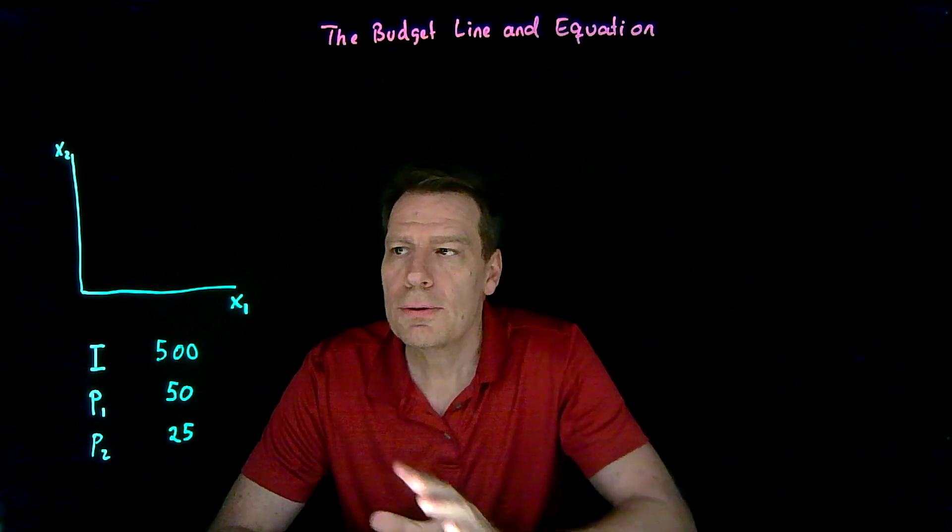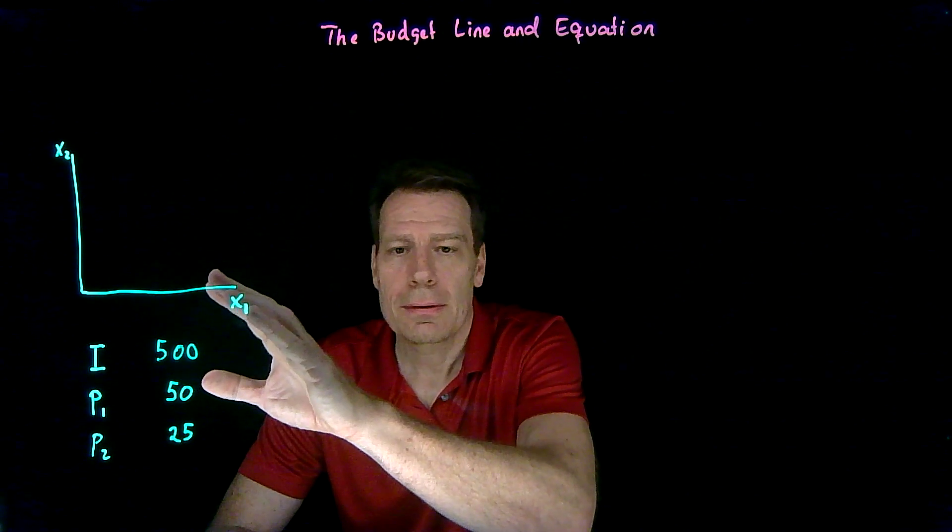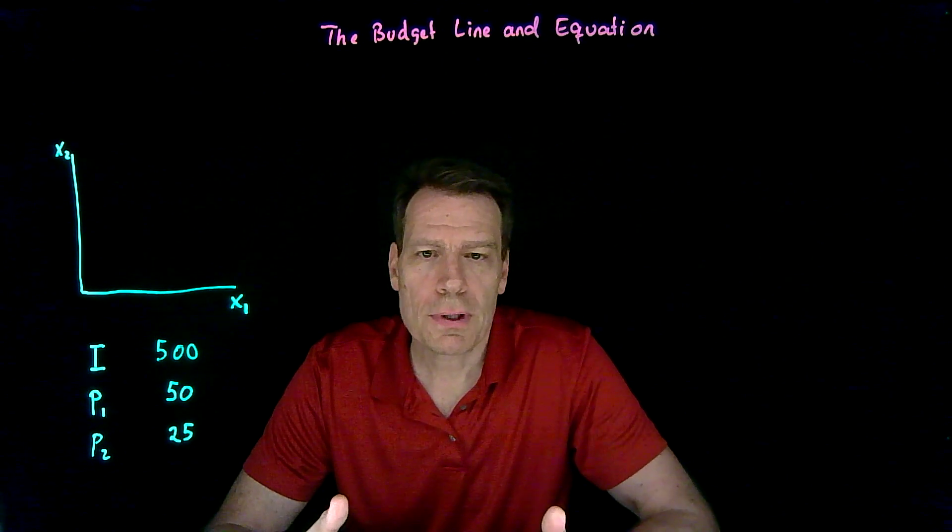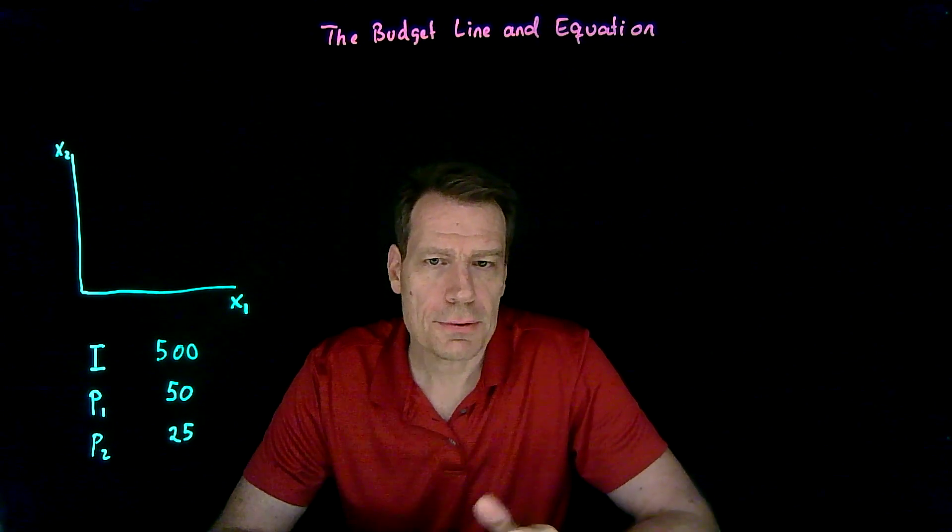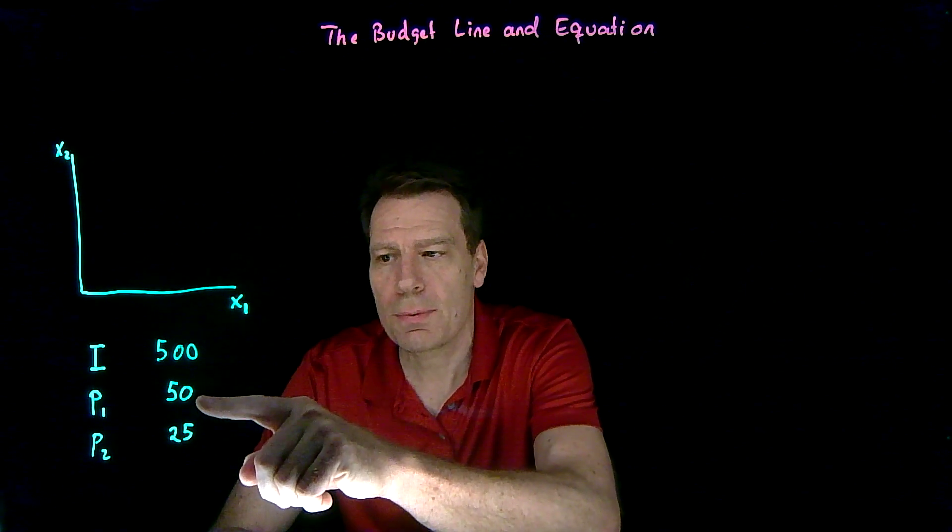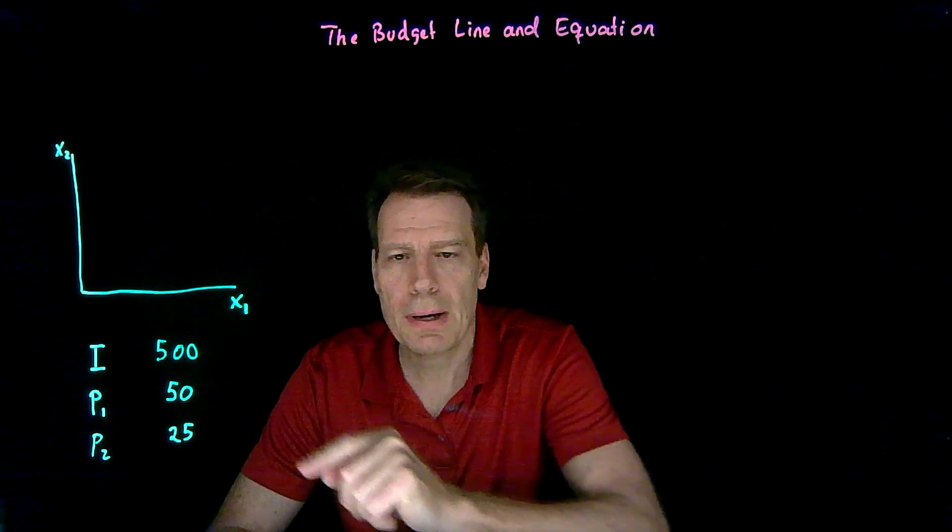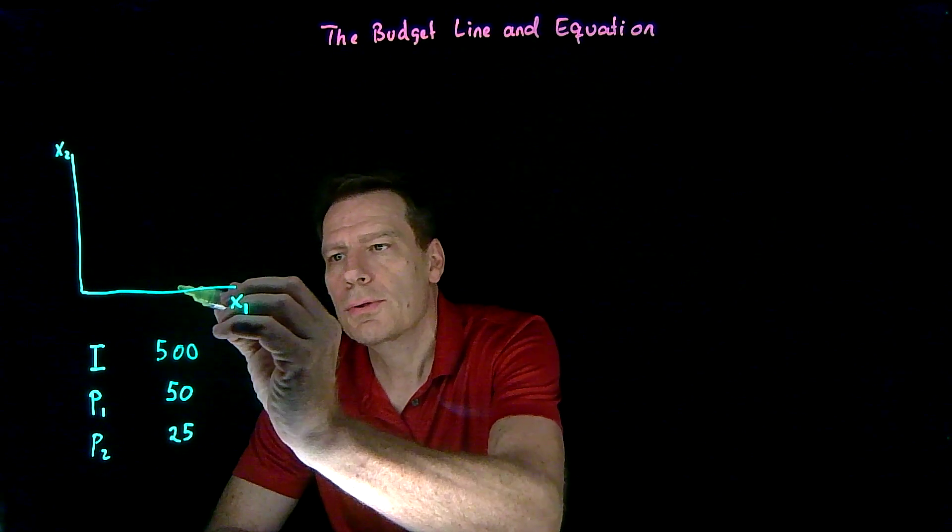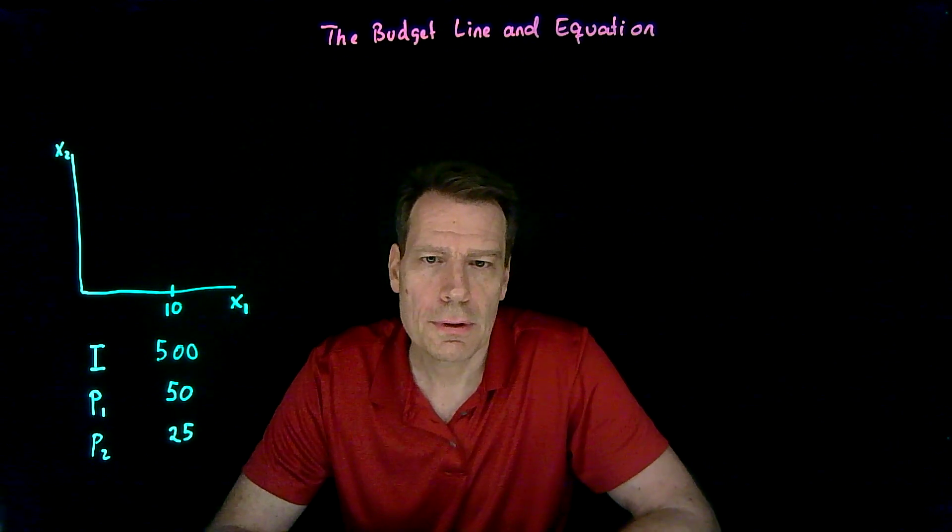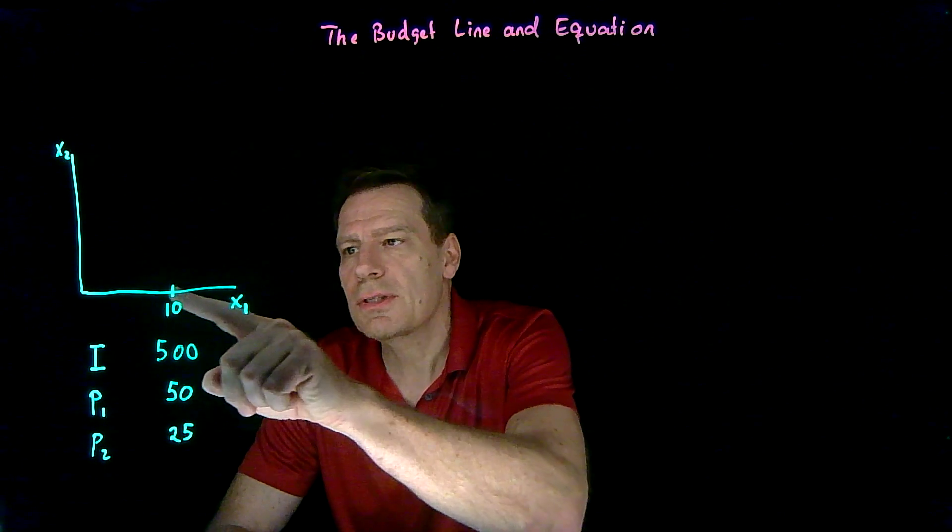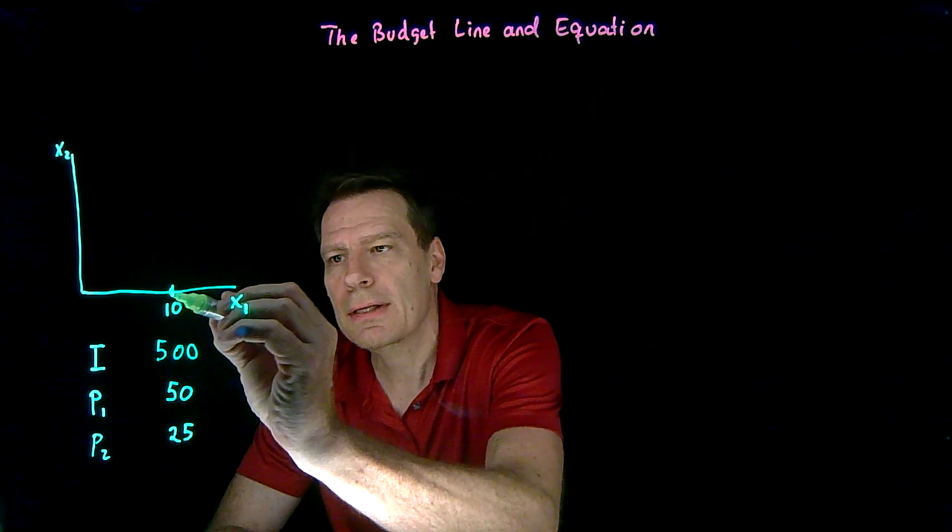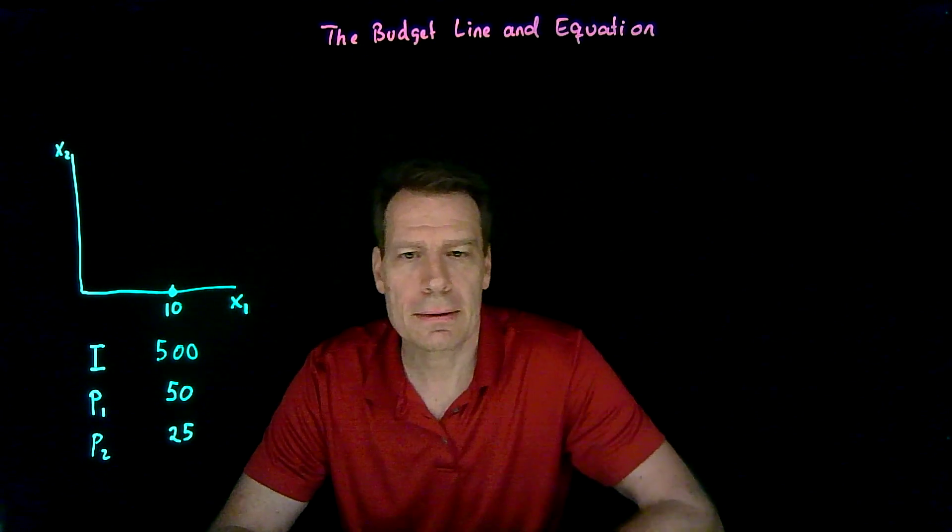One way to begin to see where the affordable bundles for you lie is to ask, how much of x1 could you buy if you bought nothing else? If you spent all your $500 on just x1, where x1 costs $50 per unit, you'd be able to buy 10 of them. So you could buy 10 units, but you'd have no money left over to buy any of the x2 good. So you'd have 0 of x2. In that case, your bundle would lie right here on this axis. You're only buying good one.